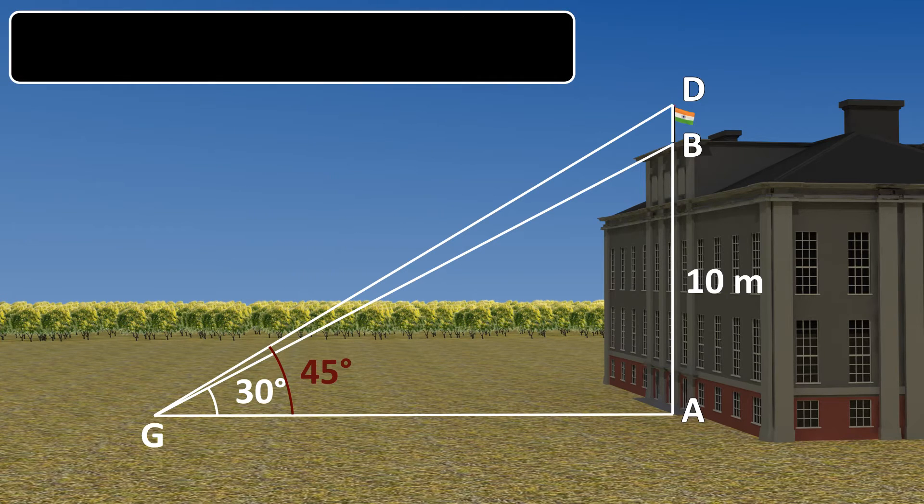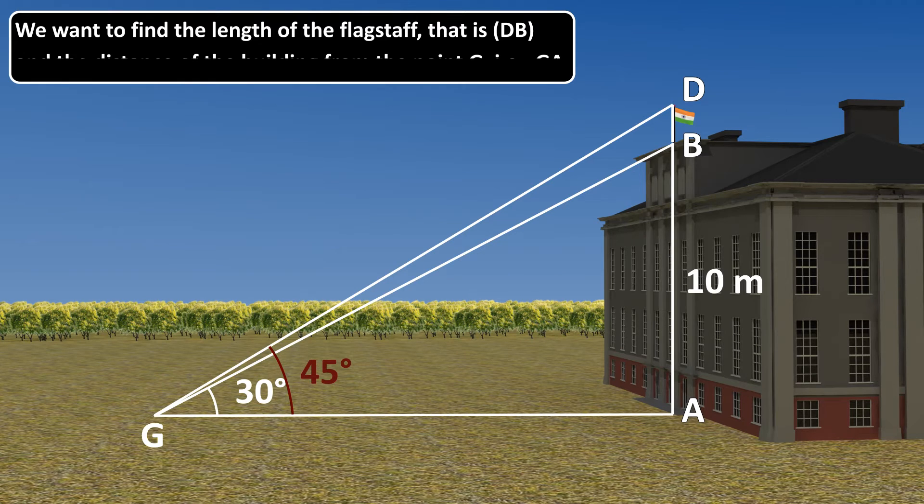We want to find the length of the flag staff that is DB and the distance of building from the point G that is GA.